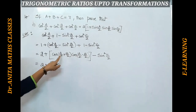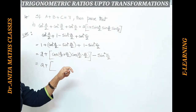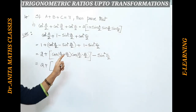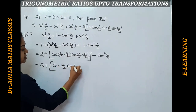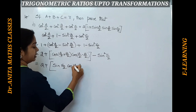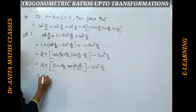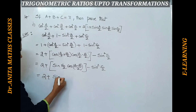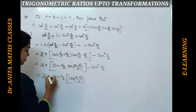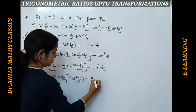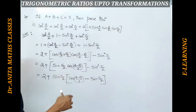Now cos((a+b)/2) = cos(90° - c/2) = sin(c/2), since a+b+c = 180° means (a+b)/2 = 90° - c/2. So the expression becomes 2 + sin(c/2)·cos((a-b)/2) - sin²(c/2). Taking sin(c/2) common from the last two terms gives sin(c/2)·[cos((a-b)/2) - sin(c/2)].